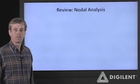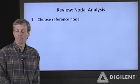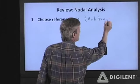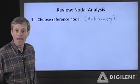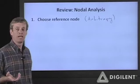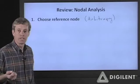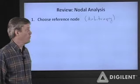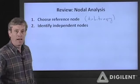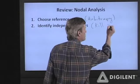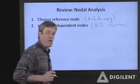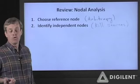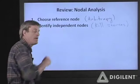Basic steps of nodal analysis. First, we needed to choose a reference node. This reference node is fairly arbitrary — it doesn't really matter which node you use as your reference. What it simply does is give you a point that you consider to be zero volts. All other voltages that you calculate will be relative to that reference node. Then we identify our independent nodes. We did this by killing the sources: short-circuiting voltage sources and open-circuiting current sources. Any nodes that remained after that process were independent nodes.